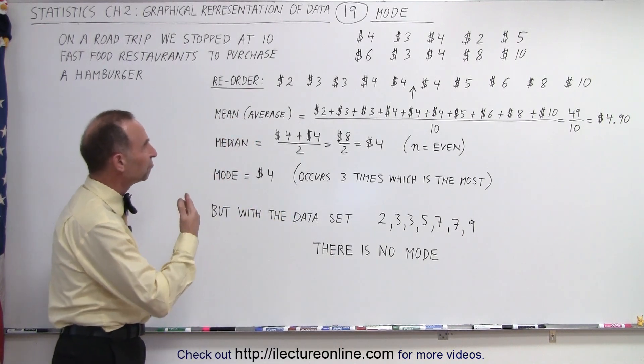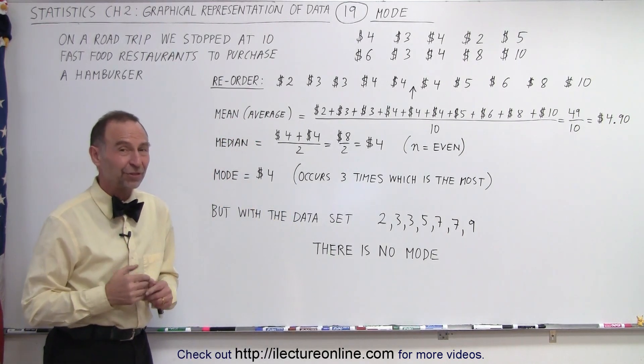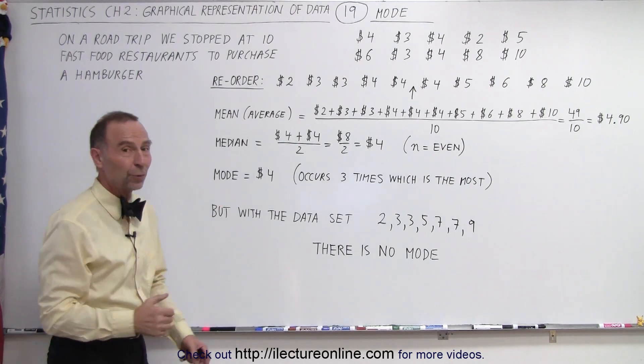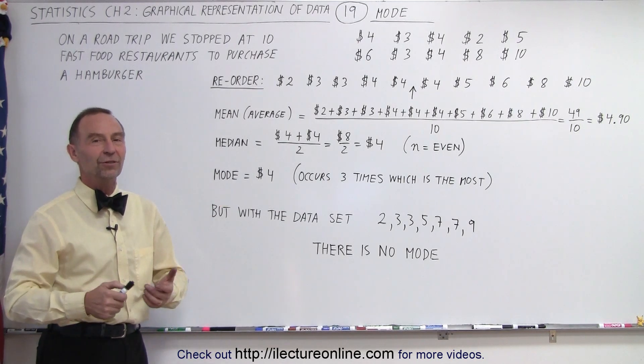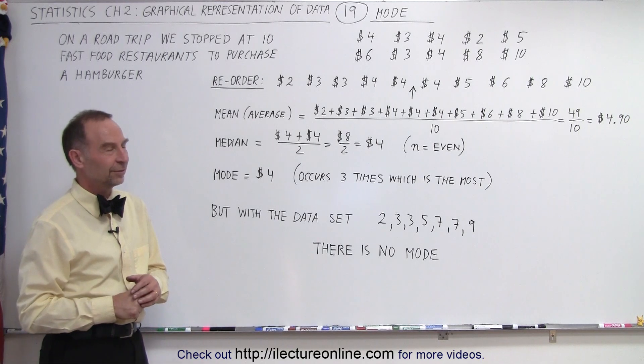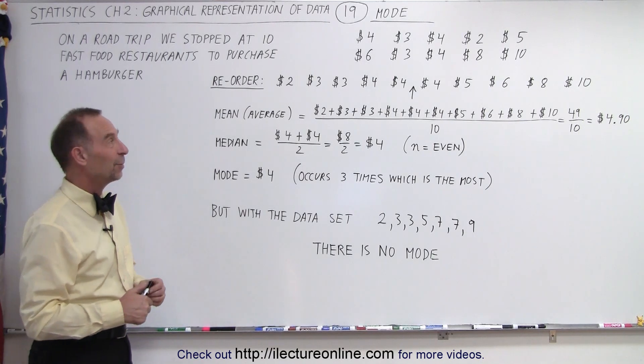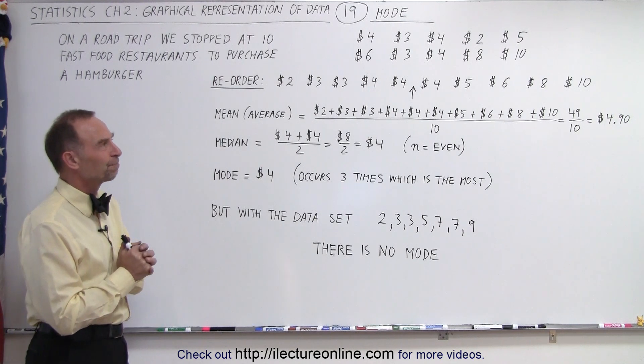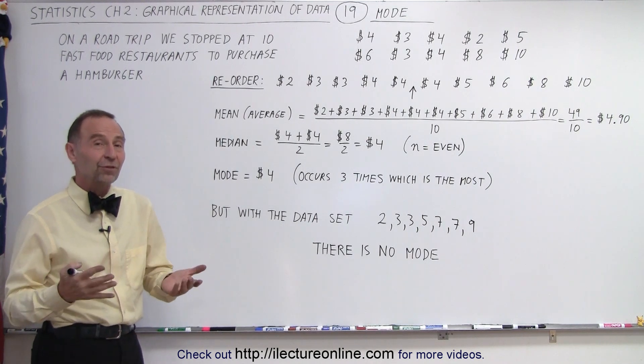So here we have 10 different prices for 10 different hamburgers. Where did the hamburgers come from? Well, we went on a long road trip and stopped for lunch, breakfast, dinner, and snacks, and we purchased 10 different hamburgers at 10 different places and paid different prices for those hamburgers.